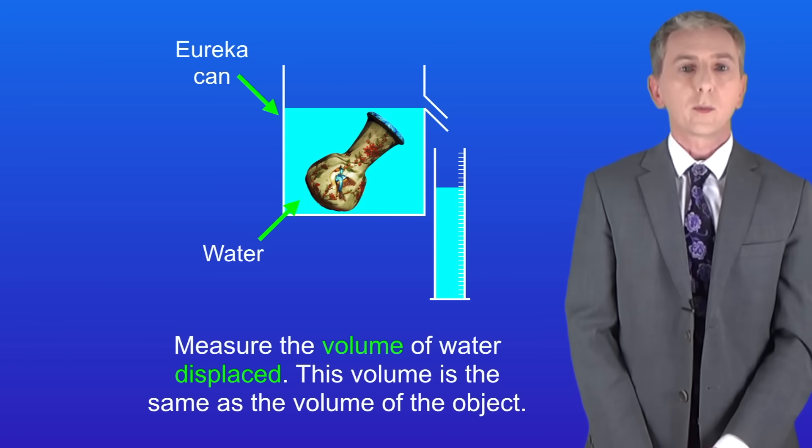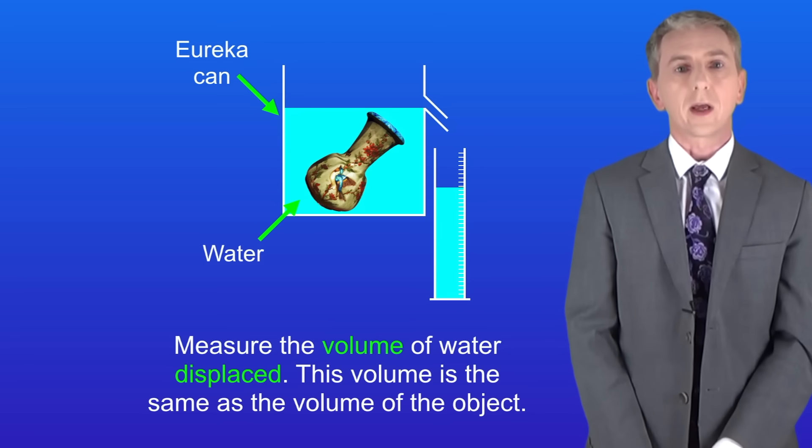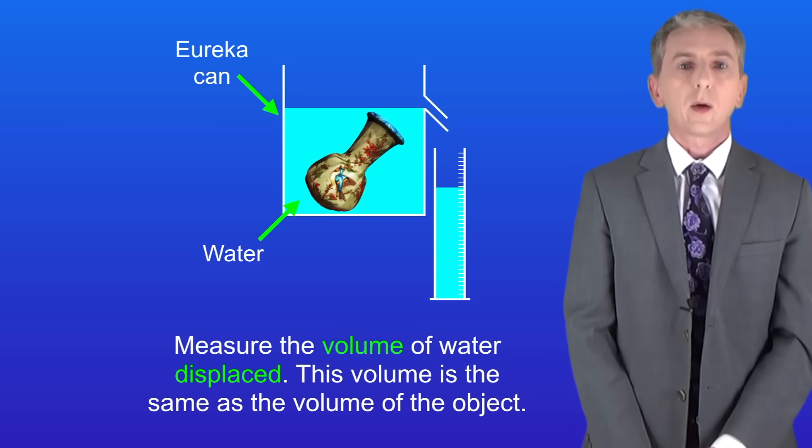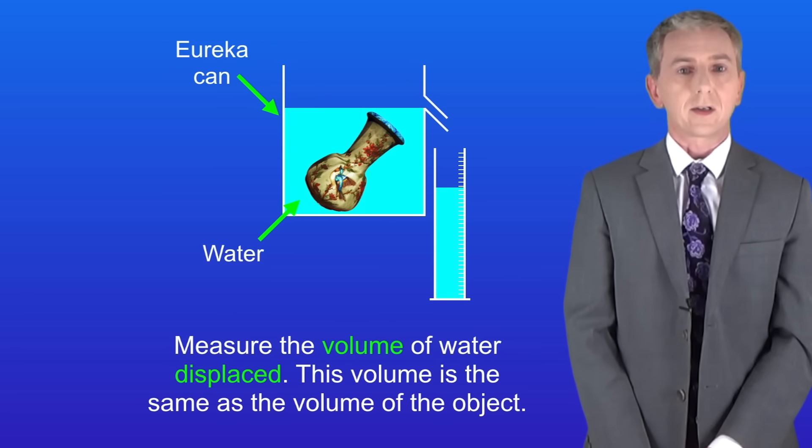We now measure the volume of water displaced using a measuring cylinder. This volume is the same as the volume of the object. So now we know both the mass of the object and the volume of the object. That means that we can calculate its density.